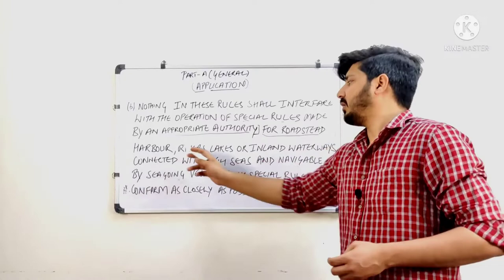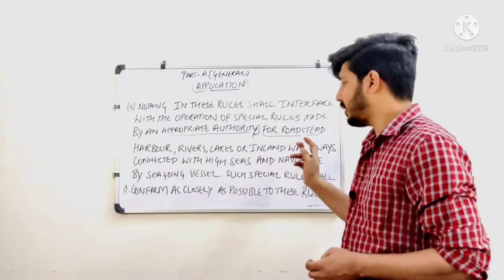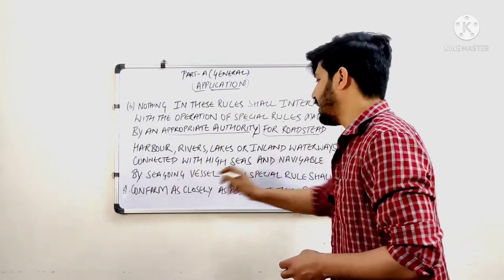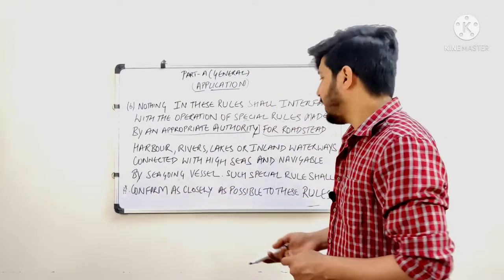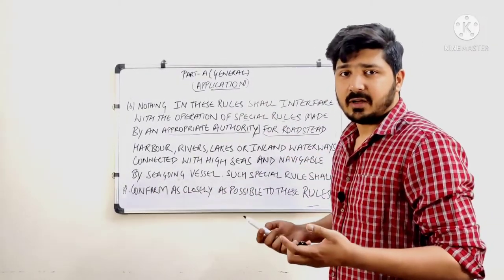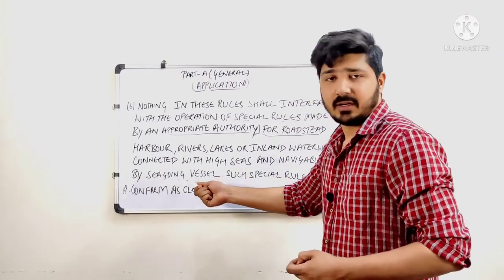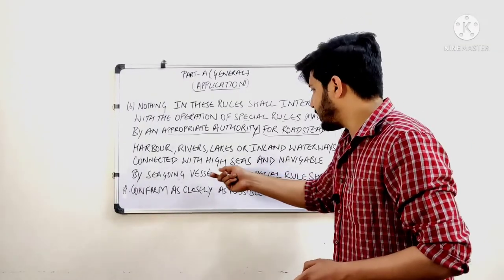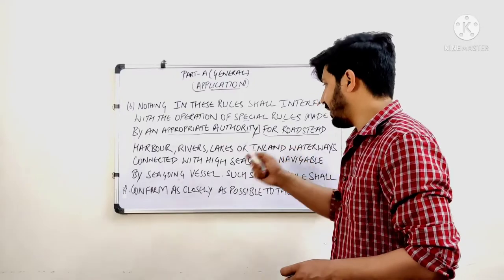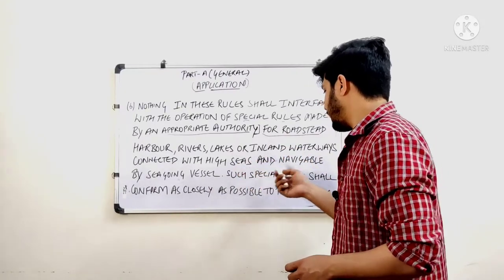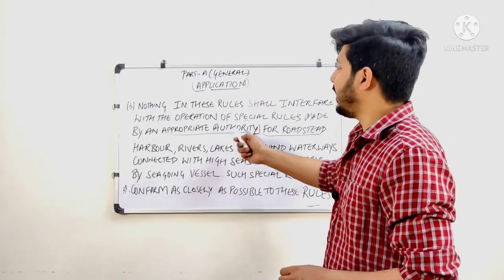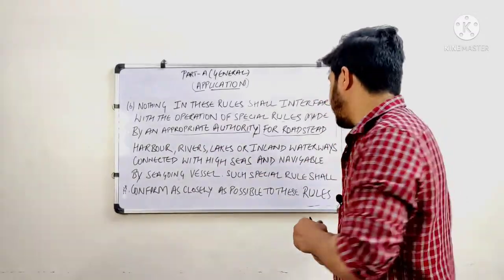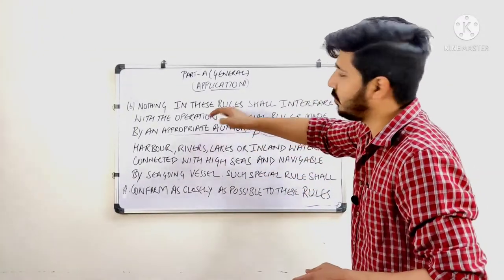Those appropriate authorities cover roads, state, harbor, river, lakes, or inland waterways. Inland waterways that are connected to the high seas and navigable by seagoing vessels are covered under Part A. So if a vessel is navigating in an area where a seagoing vessel can go, an appropriate authority can make special rules for that harbor, river, or lake, and those rules will not interfere with any rules in the ROR.